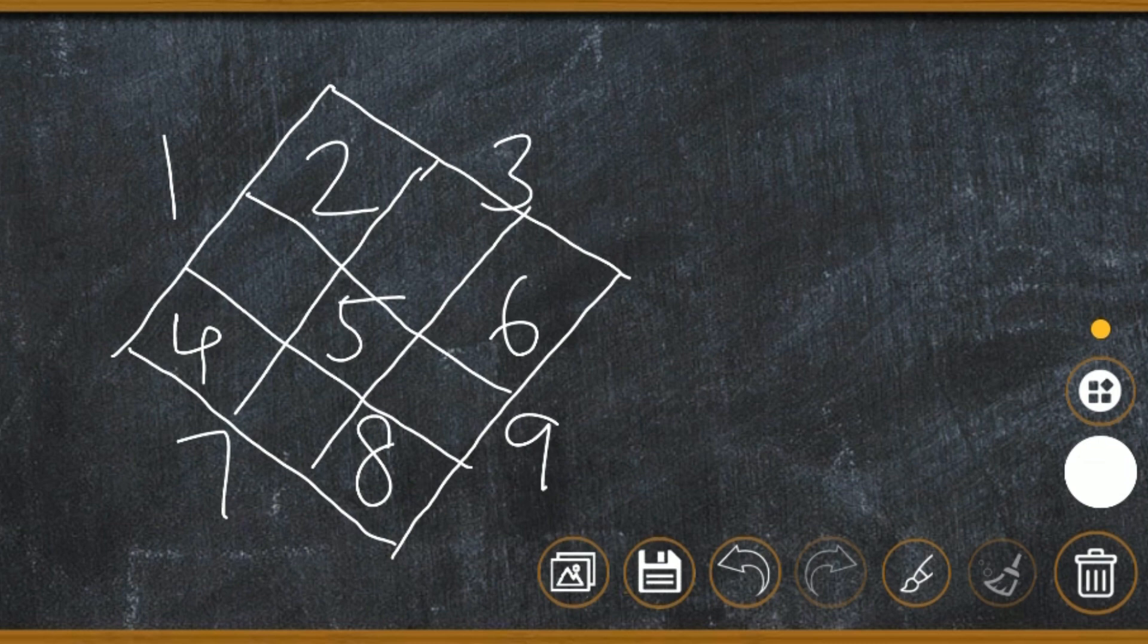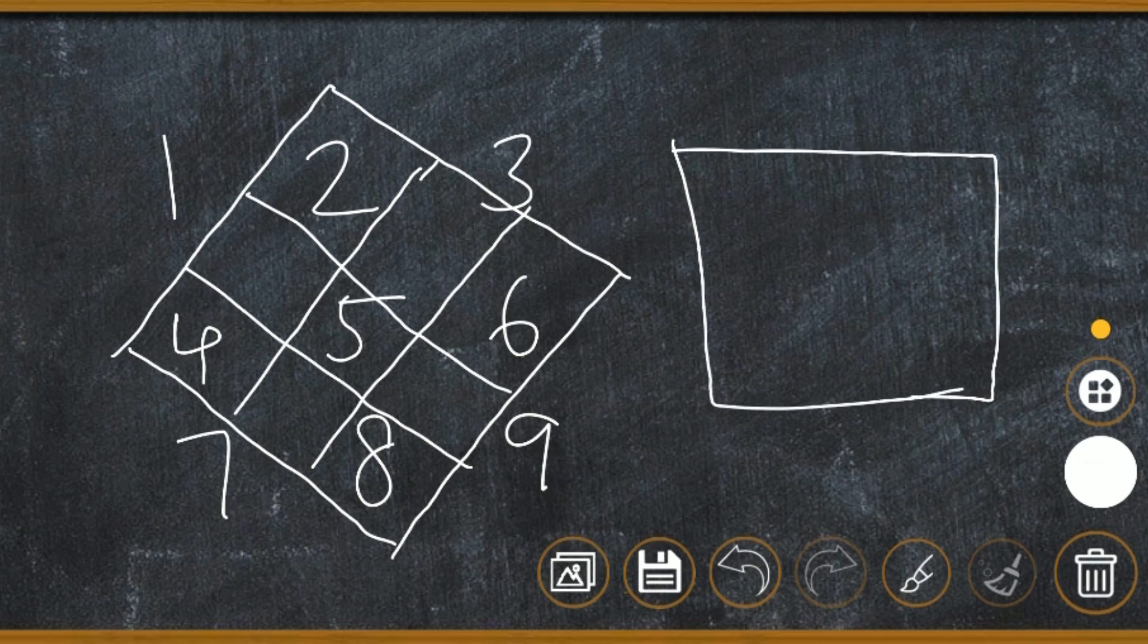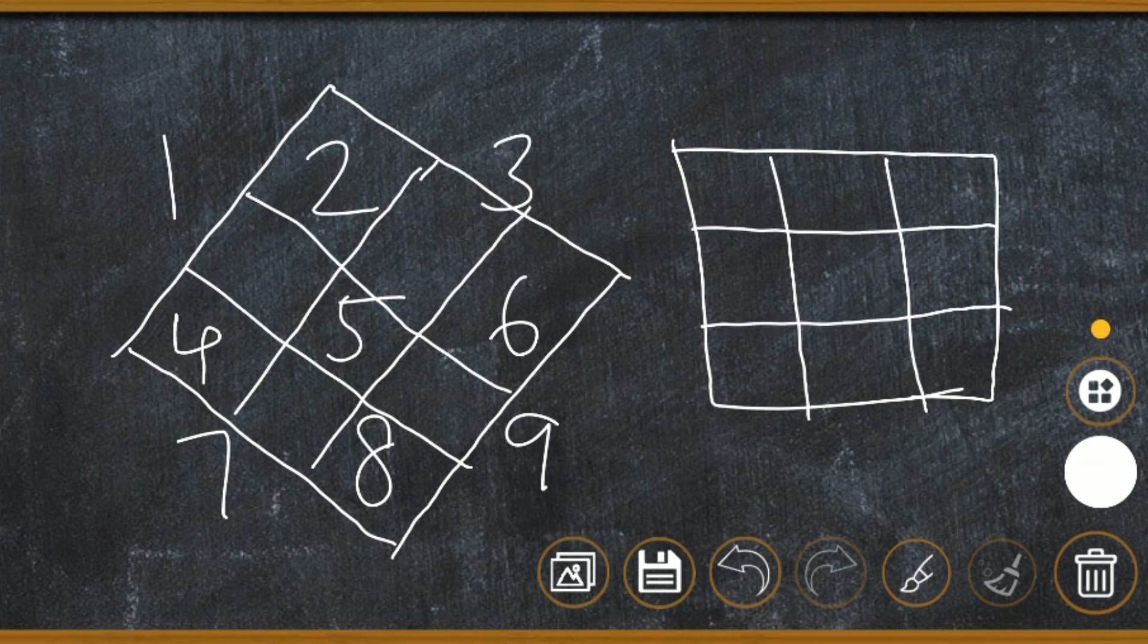In the center we can see the number five. Next we have to draw a box like this: one, two, three, four, five, six, seven, eight, nine - nine columns. Then in the center, number five, we write the number in the center portion.